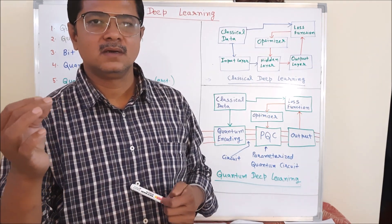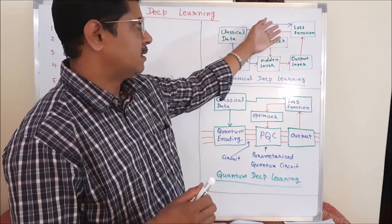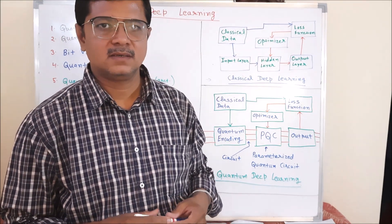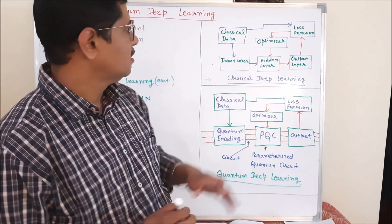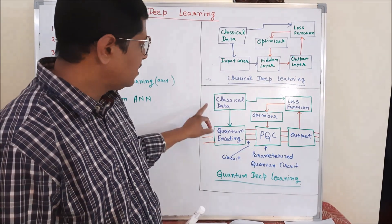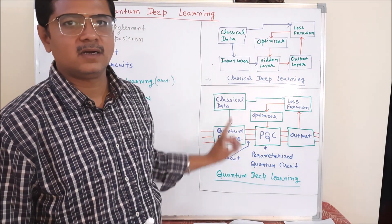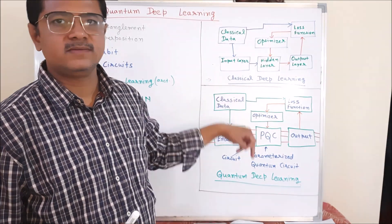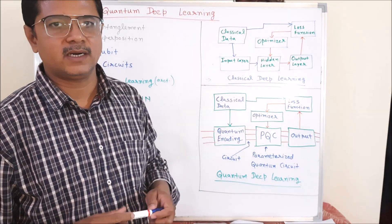You are able to predict sequences by using traditional deep learning. You have knowledge of gradients, optimizers, loss functions, etc. Basic knowledge. After that I will explain what additional knowledge we require to learn or shift towards the quantum deep learning architecture.